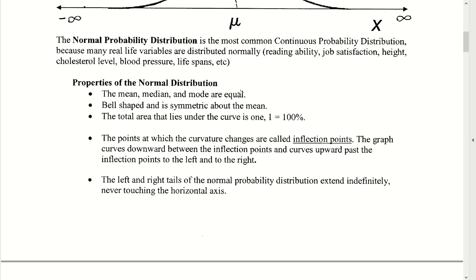The normal probability distribution is the most common continuous probability distribution. The reason for this is that many real-life variables are normally distributed — things like reading ability, job satisfaction, heights, cholesterol levels, blood pressures, lifespans, etc., tend to be normally distributed.